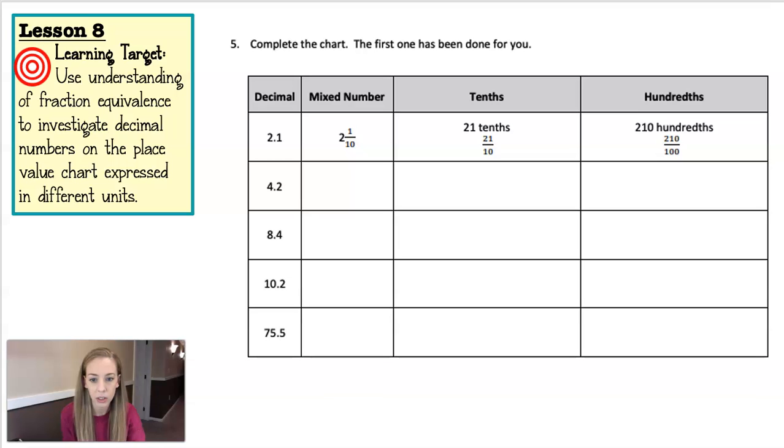One thing to look at is just if you read this number correctly, you'll be able to write the mixed number just fine. So if you read this, 4 and 2 tenths, because it's in the tenths place, 4 and 2 tenths, then you're fine. If you're reading that as 4.2, then you have to do some thinking to figure out what to write over here.